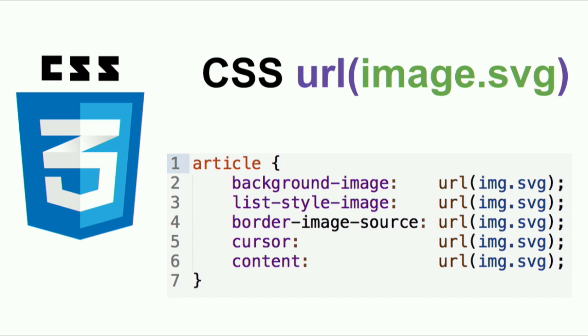Another way that probably more people are familiar with right now is just loading an SVG in a URL function in CSS. These can be used in a lot of places — like background images, list style images, those little glyphs in front of an ordered list, border images, cursors (flaky support right now), and content for pseudo-elements like before and after — you can draw images within them, which is kind of neat.